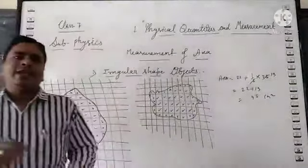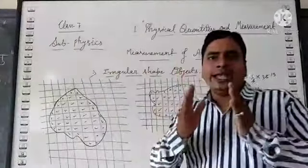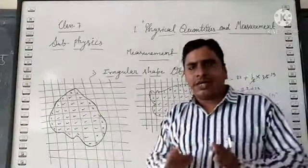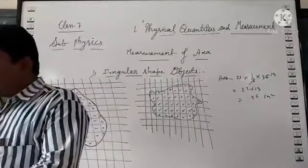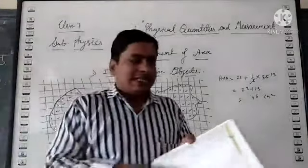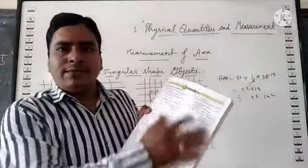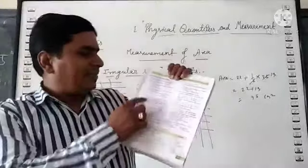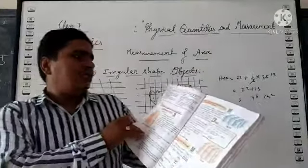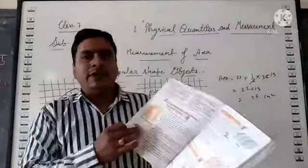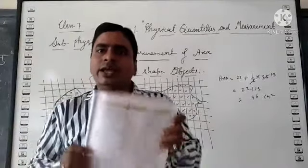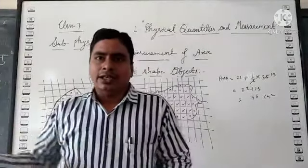So in this way you can identify and calculate the area of an irregular shape object. This is the last point of this first unit on measurement of area. Now go through the exercise and try to solve some multiple choice questions, fill in the blanks, true-false questions, and other questions given. We will discuss short answer questions later, but at least try all the objective type questions. Any doubts you can ask in the next class. Thank you, have a nice day.